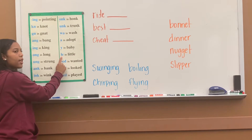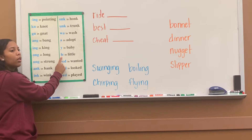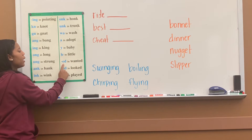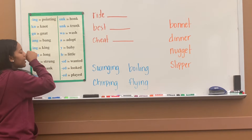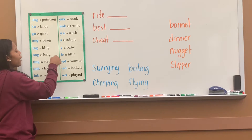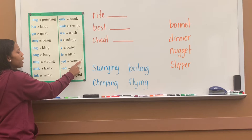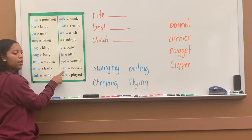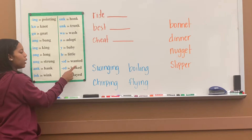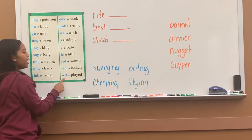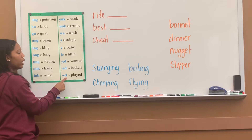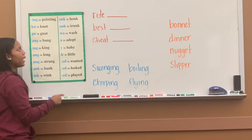L-E says 'ul' in 'little'. E-D says 'ad' in 'wanted'. E-D says 't' in 'looked'. E-D says 'd' in 'played'.